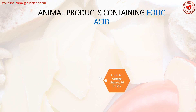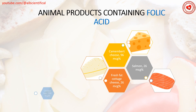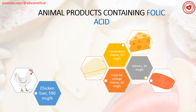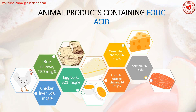What animal foods contain folic acid? Fresh fat-content cheese, salmon, camembert cheese, chicken liver, egg yolk, and brie cheese.